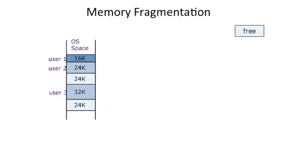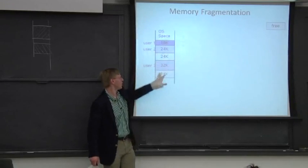Okay, so let's talk about the challenges of base and bound. So let's say we have memory here. And we start off with three processes. User one, user two, user three. User one is 16 kilobytes. User two is 24 kilobytes. User three is 32 kilobytes. And this is just some open space. Free space here and here.